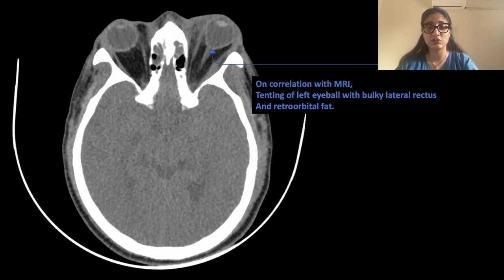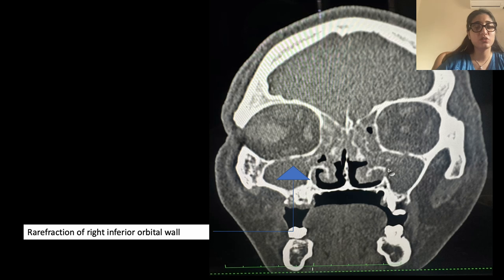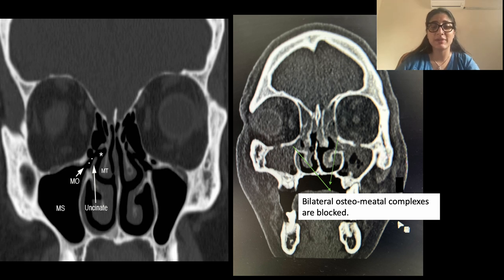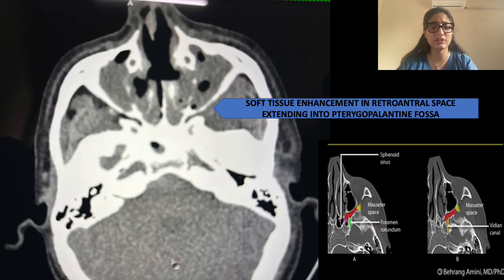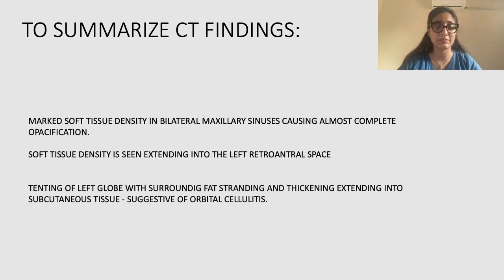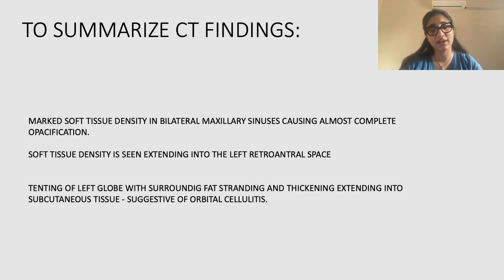On correlation with MRI, we could see denting of the left eyeball with bulky lateral rectus and retroorbital fat, indicating the involvement of the orbit. On coronal sections, we could see rarefaction of the right inferior orbital wall, again indicating orbital involvement. Bilateral ostiomeatal complexes were blocked at the maxillary sinuses, and there was a defect in the anterior nasal septum. Nasal septum perforation is one of the characteristic features of ROCM. There was soft tissue enhancement in the retroantral space extending into the pterygopalatine fossa. CT findings summary: marked soft tissue density in bilateral maxillary sinuses causing almost complete opacification, soft tissue density extending into the retroantral spaces, involvement of the orbit in the form of denting of the left globe with surrounding fat stranding, and thickening extending into the subcutaneous tissue suggestive of orbital cellulitis.